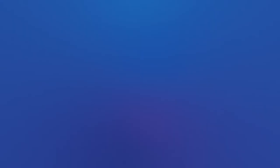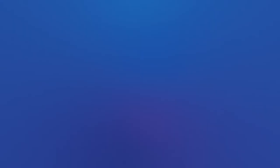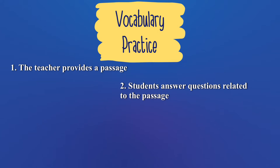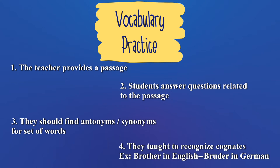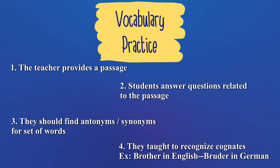Now let's see some examples. The teacher provides students a passage — perhaps from the target language literature — or writes one incorporating particular grammar rules and vocabulary. Students answer questions related to the passage in L2. They are given sets of words to find antonyms, synonyms, or to define them. They are also taught to recognize cognates by learning spelling and sound patterns — for example, 'brother' in English and 'Bruder' in German — to make connections between languages.